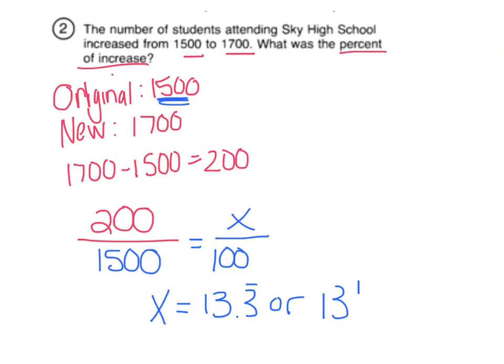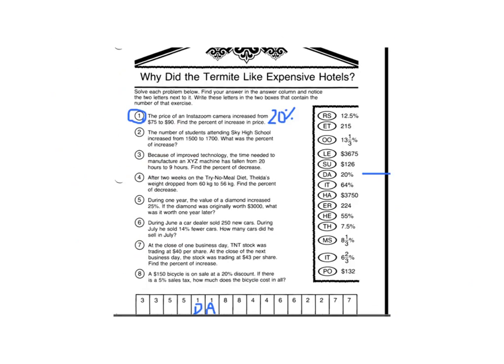So that's 13 and one-third percent. Maybe you had that and didn't see your answer there and thought it was wrong. Let's look back at the sheet and see what letter that would be. I had 13 and one-third percent, and I see that's my double O. So I go to box number 2 at the bottom and put OO.